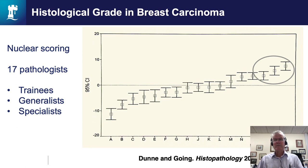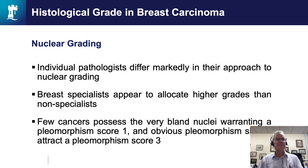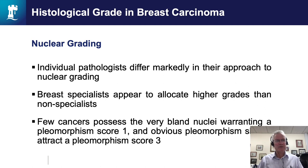Interestingly, myself and my colleagues in Nottingham were all in the top three highest scorers of nuclei. We have essentially developed the grading system and know it works and is reproducible with our methodology. To note: individual pathologists differ markedly in their approach to nuclear grading, and breast specialists appear to allocate higher scores than non-specialists. Also, very few breast cancers possess very bland nuclei warranting a score of one — most cases have a score of two or three.